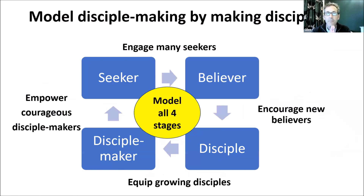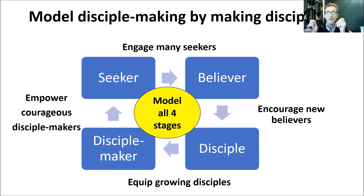Let's look at this as a process of four stages. A good disciple maker models all four parts of the process. You cannot make a fully rounded disciple unless you are actually able to do all four things. If you can't engage a seeker to the point of telling them about Jesus, you're never going to make a disciple. If you don't sow the seed, the plant will not grow. But if you just engage the seekers and bring them to a point of belief, that's only stage one. So encouraging new believers is really, really important.